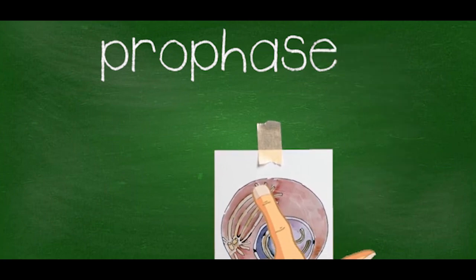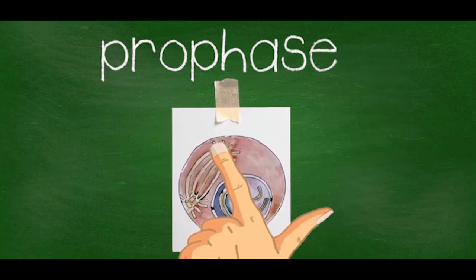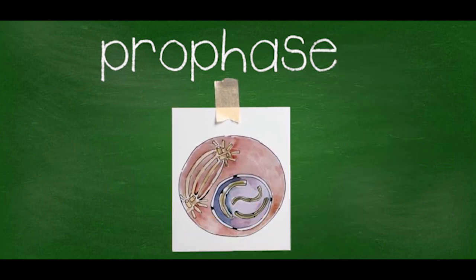Prophase: chromatin fibers become more tightly coiled and the nuclei will disappear. Chromosomes can be seen with sister chromatids. The mitotic spindle begins to form and centrosomes move away from each other. The mitotic spindle is made up of centrosomes and associated microtubules.